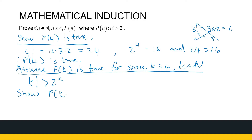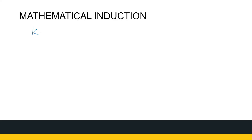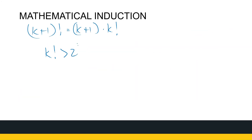Our last step is to show that P(k+1) is true. We look at (k+1) factorial and compare it to 2^(k+1). Now, (k+1) factorial equals (k+1) times k times (k-1) all the way to 1, so we can write that as (k+1) times k factorial. That's a nice start, because I have information about k factorial — I know k factorial is greater than 2 to the power k.